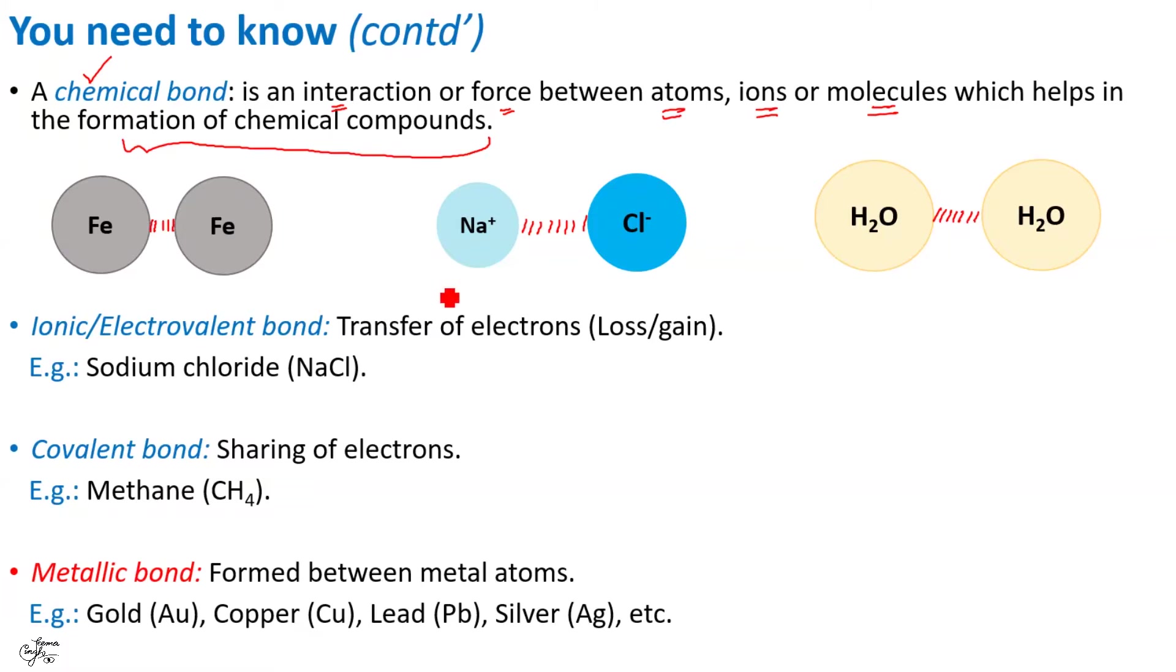Now, there are different types of bonds depending on how they are formed. A bond can be formed by transfer of electrons that is loss or gain of electrons. Such bonds are known as electrovalent bond or ionic bonds. These bonds are formed between a metal and a non-metal. For example, sodium chloride. You will study about it in my subsequent video on this chapter.